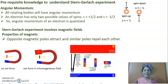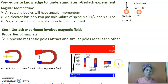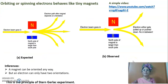If the electron behaving like a magnet comes such that the south pole is near to the north pole of the big magnet, it gets attracted. If the north pole is facing the north pole of the big magnet, then it will be repelled downwards. If the atom is oriented sideways, it doesn't experience any force at all. So let us now get into the experiment.